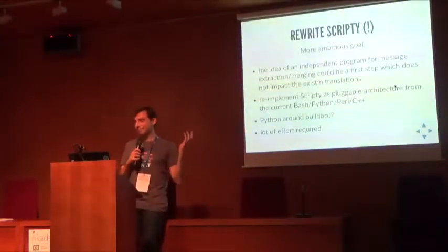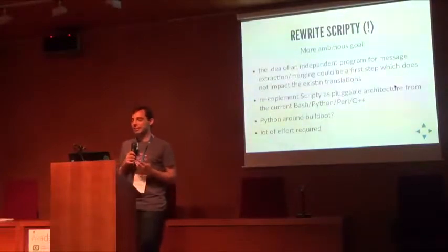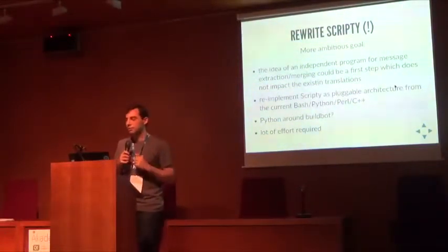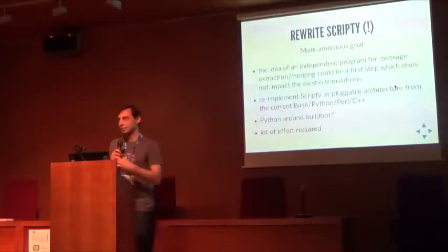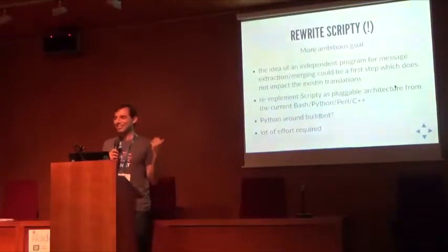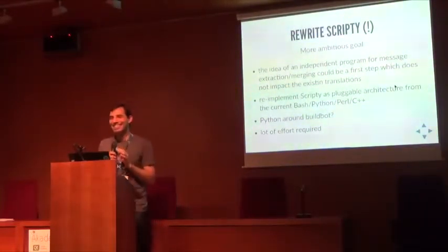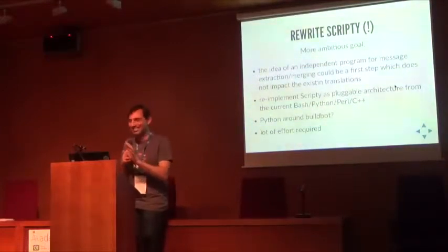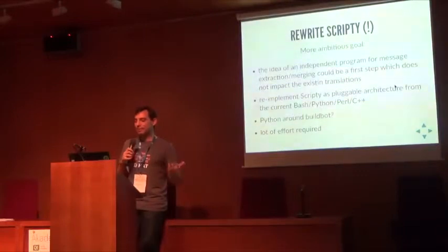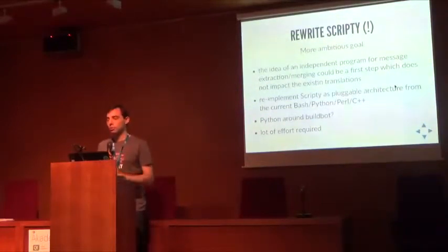That brings to the scary point: rewriting scripting — something you don't want to do in just one shot. It's a really ambitious goal. The problem explained in the previous slide would be the first step; it can be done independently and then plugged in to clean up parts of scripting. Right now scripting is a collection of Bash, Python, and C++ programs all together, which is why adding things there is not easy. A possible idea would be to use Python around Buildbot — a Jenkins-like engine written in Python — to write automation steps. A lot of effort is required and you don't want to do everything in one shot.